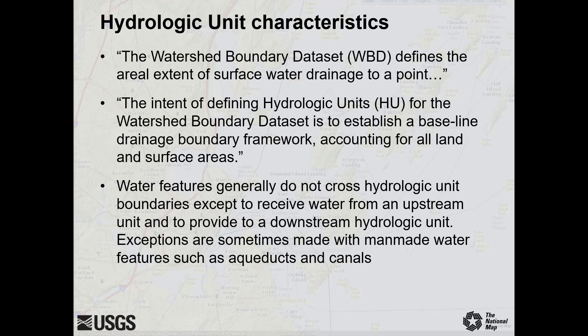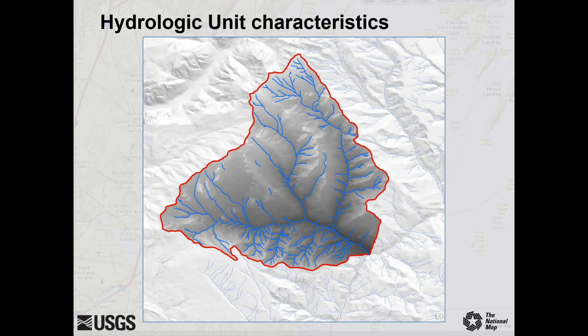Exceptions are sometimes made with man-made water features such as aqueducts and canals. This illustration shows how elevation data define a small hydrologic unit around the hydrography contained within. Note how the water features in this example do not cross the unit boundaries except to flow to the next hydrologic unit downstream.